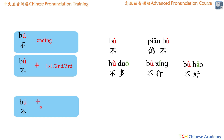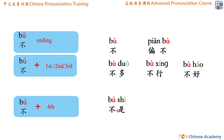If the character 不 is followed by another fourth tone, then bù is changed into bú — the second, rising tone. The reason is simple: because if we pronounce two fourth tones in a row, it's pretty hard. It's much easier if the first one is a rising tone. For example, 不是 (bú shì) — if you try bù shì, it's really hard, so it's much easier to say bú shì. Similarly, 不会 (bú huì) means 'cannot' or 'not able to,' and 不要 (bú yào) means 'do not want.'